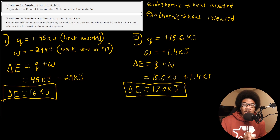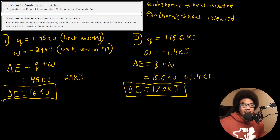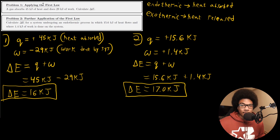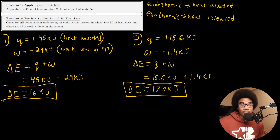Simple as that. The crux of figuring out these problems is just making sure that you have the signs correct based on the situation described in the problem. If you have those signs correct, then it's just as simple as adding together both energy transfer mechanisms to get the total energy transfer from the law of conservation of energy.